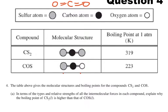So the first one says, the table gives the molecular structures and boiling points for the compounds CS2 and COS. In terms of the types and relative strengths of all the intermolecular forces in each compound, explain why the boiling point of CS2 is higher than the boiling point of COS.